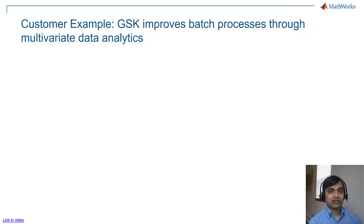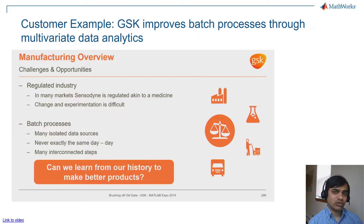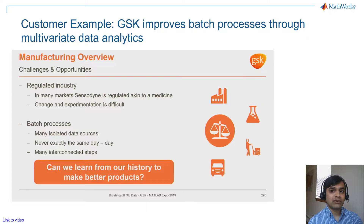Another example is from GSK, who spoke at MATLAB Expo 2019. One of their products is Sensodyne, which is a toothpaste. Toothpaste is almost regulated like medicine in some countries, so there is a lot of regulation and quality checking. Change and experimentation is quite difficult in the process. You can see some of the challenges they face here: batch process quality depends on the experience of the operator, databases are silos requiring different logins, and so on. In this presentation, they spoke about how they use their process data to improve the performance of future batches.